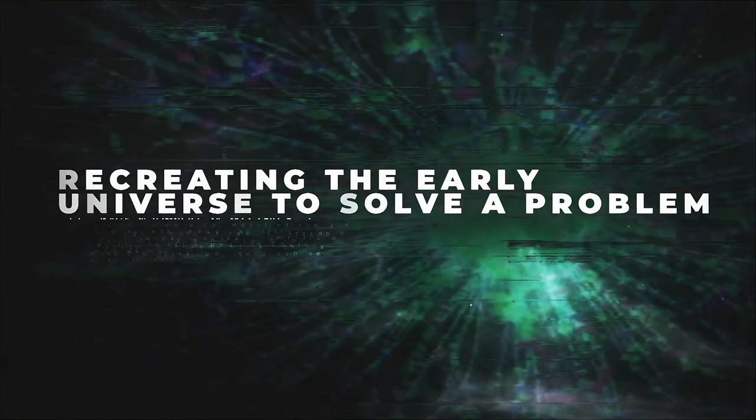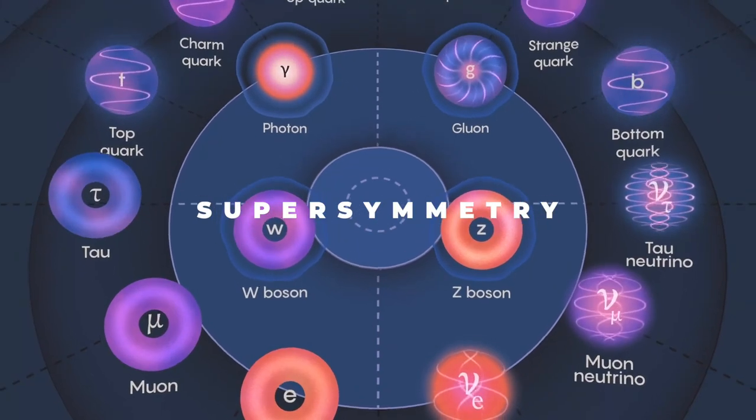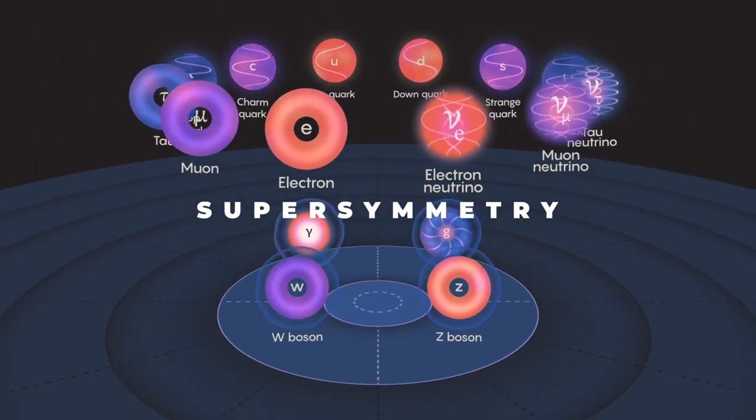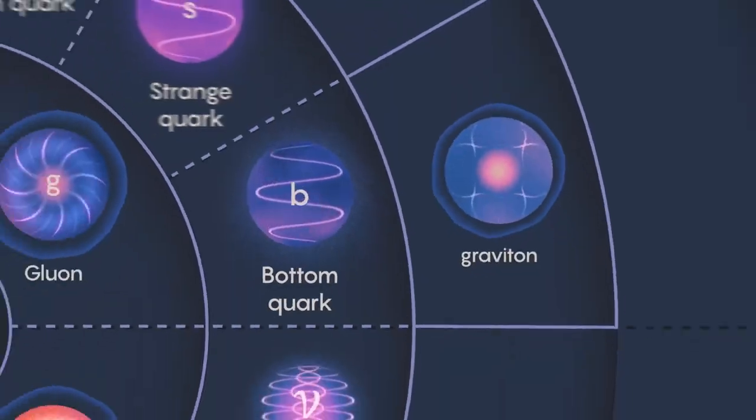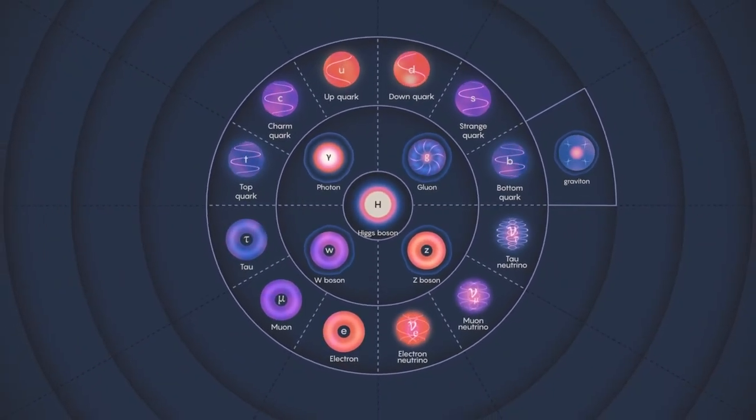Recreating the early universe to solve a problem. There is a theory called supersymmetry that suggests that all of these fundamental particles that make up the standard model have super particle counterparts that have different spin from their partners. Even though it has not been proven yet, it is a vital part of the standard model that helps the whole system work.